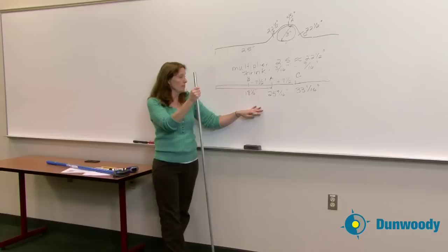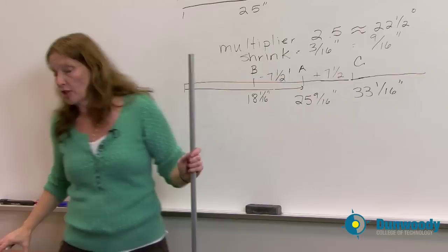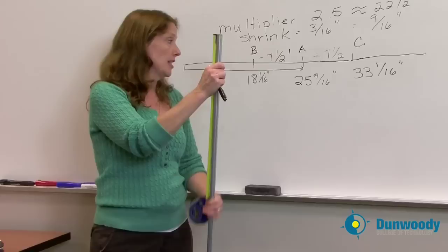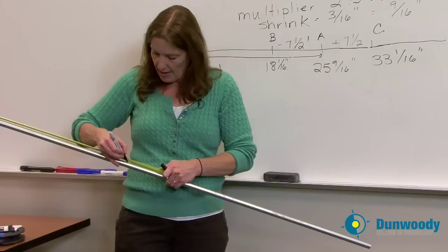Once again we'll use our problem from the board where we had a 25 and 9 sixteenths obstruction. I'm going to take my tape measure and come to the end of my conduit. I know that I want to start with my A mark, so I'm going to measure out that 25 and 9 sixteenths, remembering I did add 9 sixteenths for my shrink onto the value. I'm going to mark it at 25 and 9 sixteenths.